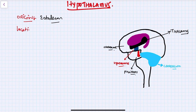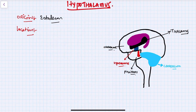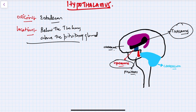The location of the hypothalamus: the hypothalamus is situated below the thalamus and above the pituitary gland. This makes a crucial link between the nervous system and the endocrine system. As you can see on the right hand side, the hypothalamus is shown in red, with the pituitary gland below it and the thalamus above it.